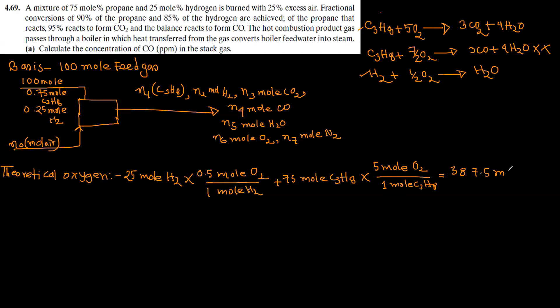Actually, if we have theoretical oxygen, we know how to get air easily. Air mol, we multiply theoretical oxygen by 4.76. With 25% excess, we multiply by 1.25. So n0 is 362.5 mol.